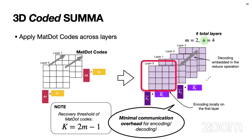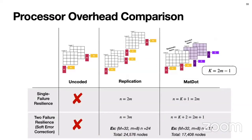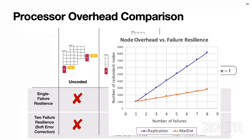One may notice that the number of layers needed is almost as large as replication, since we use four layers instead of two. Is it really better? The benefit of using MatDot codes comes out when building more than single-failure resilience. For single-failure resilience, both replication and MatDot codes require 2M layers. But for two-failure resilience, replication requires 3M layers in total, whereas MatDot codes only require K plus 2 — in this case 2M plus 1. This difference grows larger for three failures, four failures, and so on, as summarized in the graph: for single-failure resilience the node count is the same as replication, but as we want more resilience, MatDot codes perform significantly better.